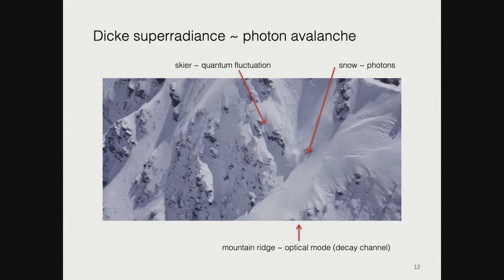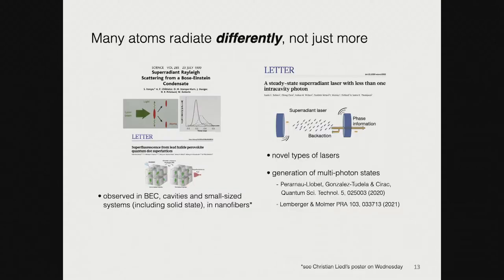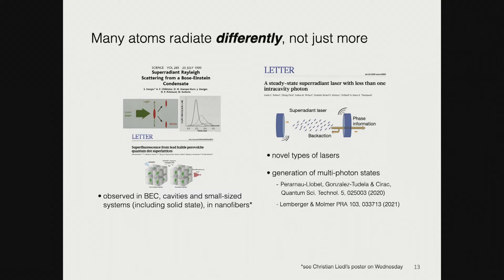Has Dicke superradiance been seen? Is it useful? The answer is yes. Dicke superradiance has been seen in many different systems: atoms in cavities, Bose-Einstein condensates, solid-state systems including perovskites, and also atoms coupled to nanofibers. Superradiance is also useful for applications such as the superradiant laser, which operates in the bad-cavity limit and is therefore more robust to thermal fluctuations. It also enables generation of multi-photon states, as explored in papers including one by Klaus Mølmer, who talked to us yesterday about how these photons are multi-mode states.